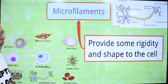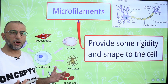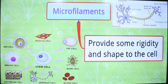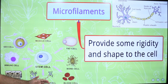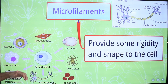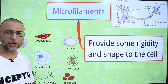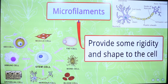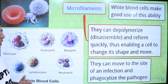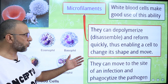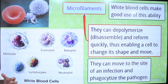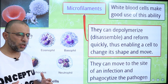Microfilaments provide some rigidity and shape to the cell. The cytoskeleton gives the cell its shape and helps to organize the cell parts. We have different types of cells in our body like fat cells, bone cells, blood cells, nervous cells, epithelial cells, immune cells, sex cells, and muscle cells. All these cells have different shapes because they have different arrangements of microfilaments. Microfilaments can depolymerize, disassemble, and reform quickly, enabling the cell to change its shape and helping the cell in movement.